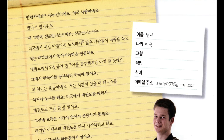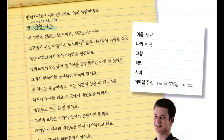만나서 반가워요. We usually just memorize this expression, isn't it? So now we can analyze it. This short sentence consists of two clauses. I'm glad. Because — 아서, 어서, 해서 — Because I meet you. Nice to meet you.